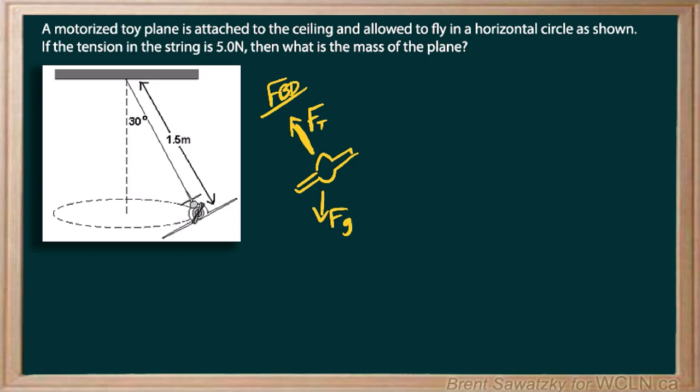I know sometimes with tension we can just draw it as a capital T. In the centripetal section I would almost suggest going with FT instead of T just because sometimes we run into the period capital T, and so just to avoid confusion FT is a good choice.